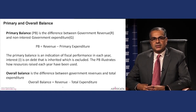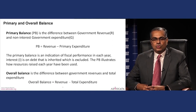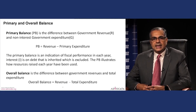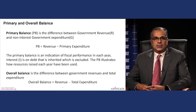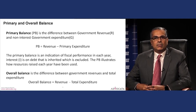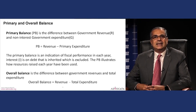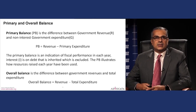Some further definitions: the concept of a primary balance is the difference between government revenue and non-interest expenditure. It is a good way to judge a budget because interest is what you pay on accumulated debt, revenue is what you collect in a given year, and primary expenditure is how you spend it. The overall balance takes the primary balance and deducts interest — this is what is commonly understood in Sri Lanka.